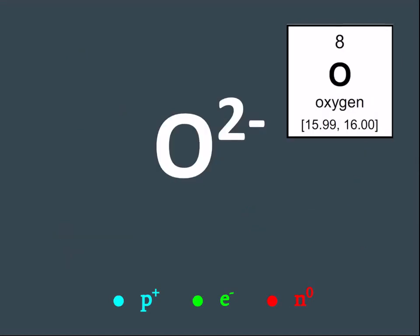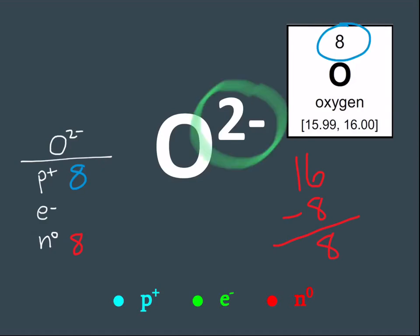How about we try O2 minus? There's eight protons. I know that from the periodic table. And when I take the mass number 16 minus eight, I have eight neutrons. Now, normally, oxygen would have eight electrons. But take a look. We're dealing with an ion. And it looks like oxygen, two minus, has two extra electrons. So instead of eight electrons, there's going to be ten.